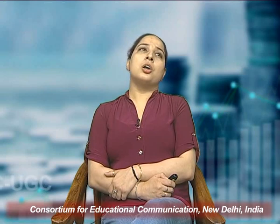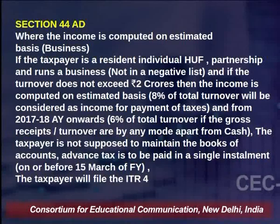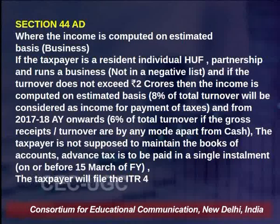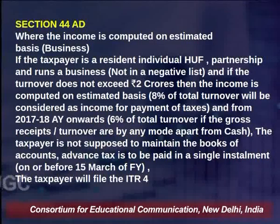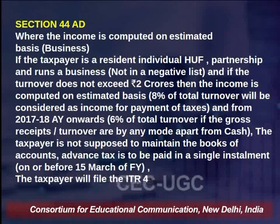Coming on to section 44AD — in which cases income will be computed on an estimated basis. When the taxpayer is a resident individual, Hindu undivided family, or a partnership firm, and he is running a business which is not in the negative list, and the turnover does not exceed the limit — which has been raised to ₹3 crores — then the income taken on an estimated basis will be 8% of your turnover.